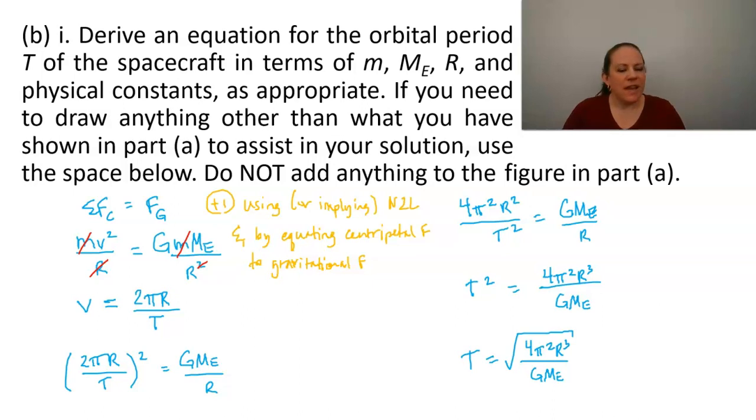We're going to get our second point for explicitly or implicitly determining the speed of the craft. So the point is that we write v equals 2 pi R over T.